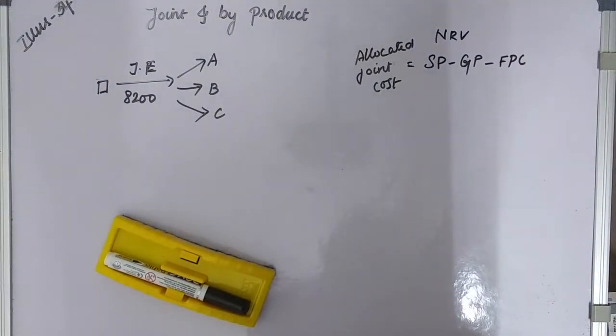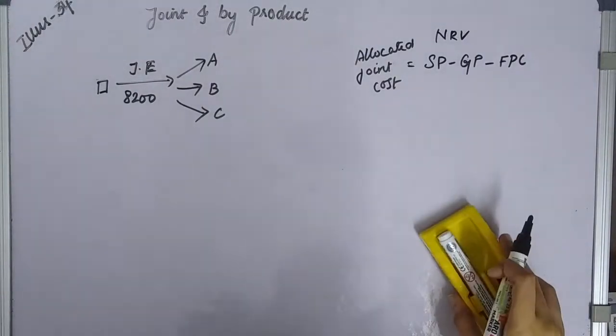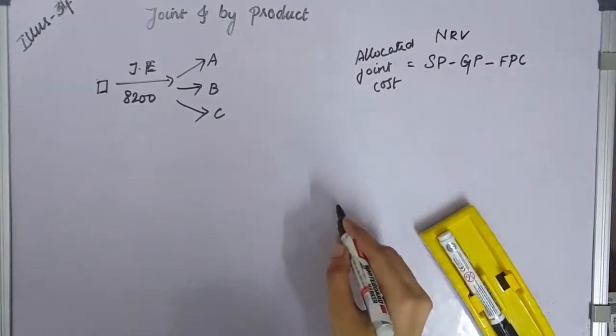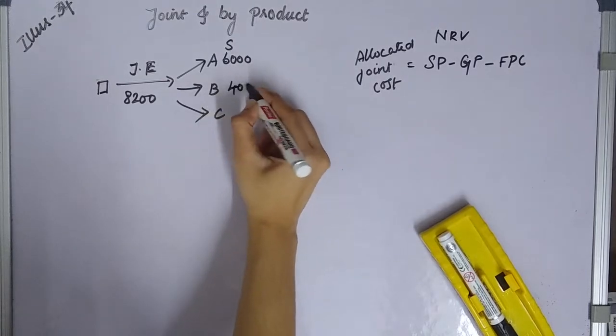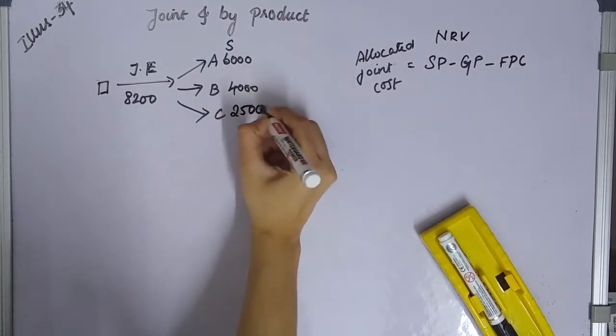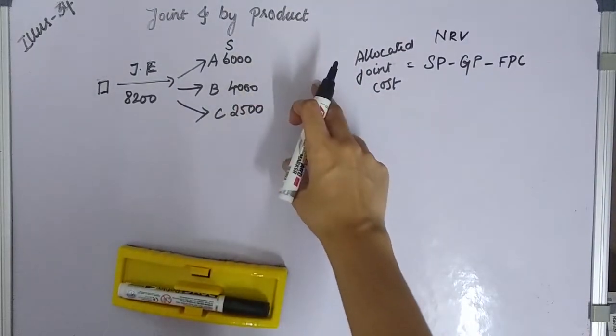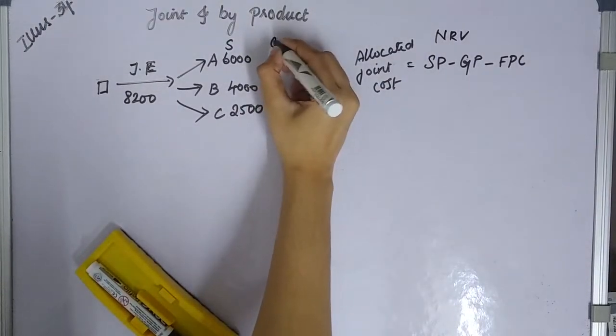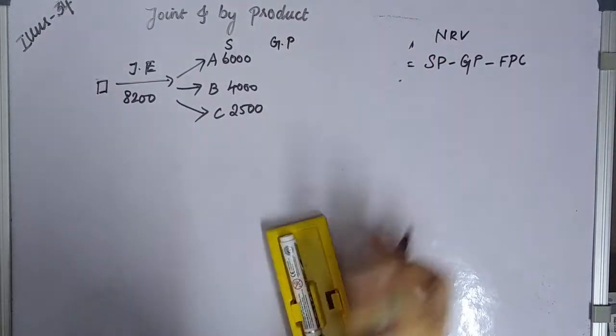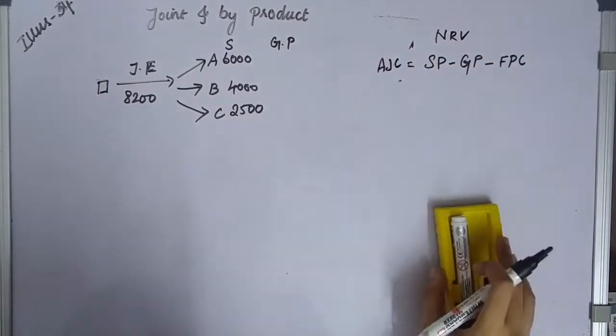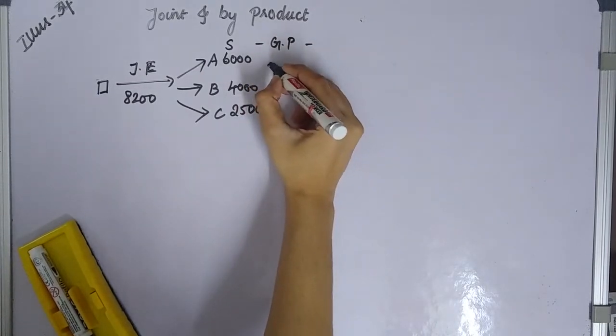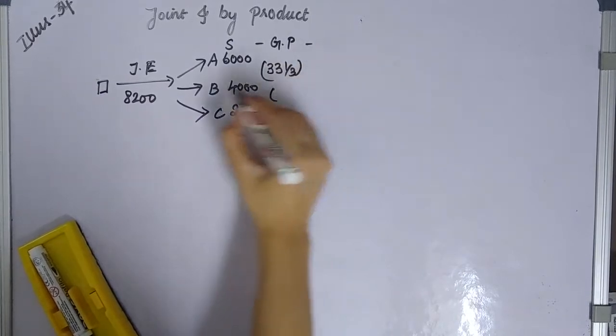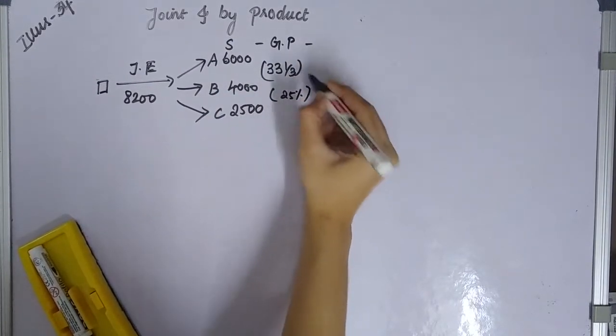Sales are given: 6000 for A, 4000 for B, 2500 for C. The profit percentages are: 33 1/3% for A, 25% for B, and 15% for C. This gives us gross profit.